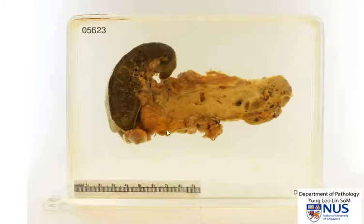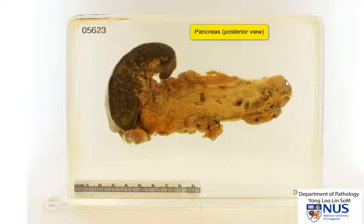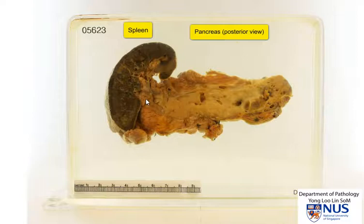Hello, here is a specimen showing the pancreas along almost its entire length. This is the region of the head and neck, this is the body, and the tail. And of course we have the spleen here, so we're actually looking at the posterior view. And there's some peripancreatic fat here.